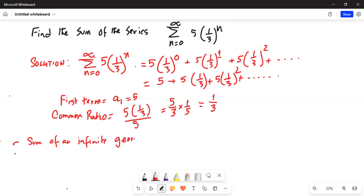Geometric series is given as S which is equal to A1 divided by 1 minus R. In my case, A1 is 5 and this is 1 minus 1 third.